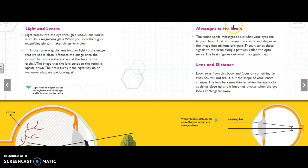The next subheading, messages to the brain. The retina sends messages about what your eyes see to your brain. First, it changes the colors and shapes in the image into millions of signals. Then, it sends these signals to the brain along a pathway called the optic nerve. The brain figures out what the signals mean.